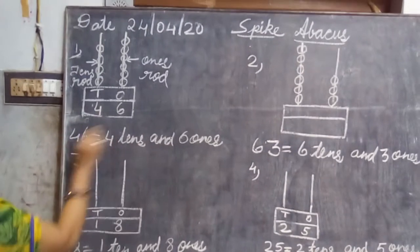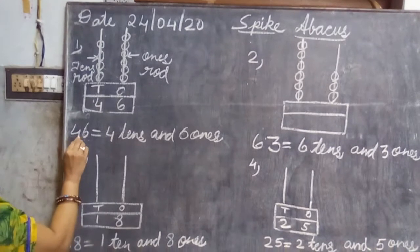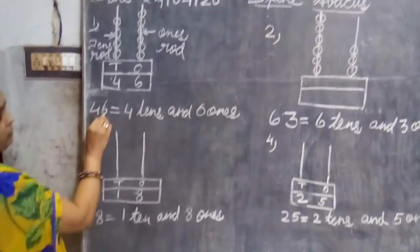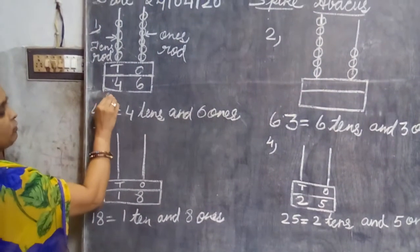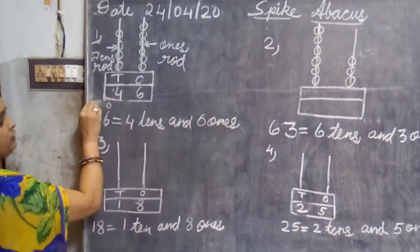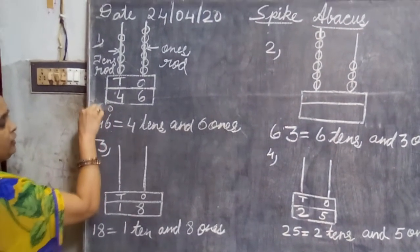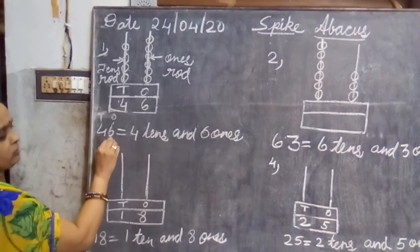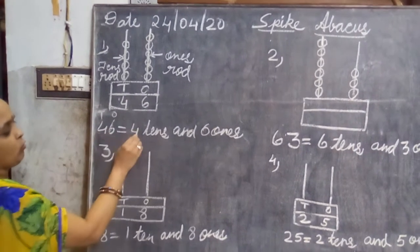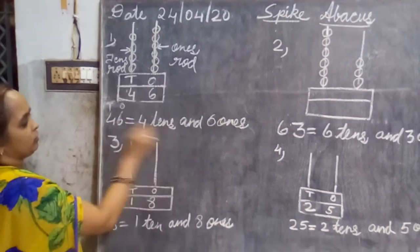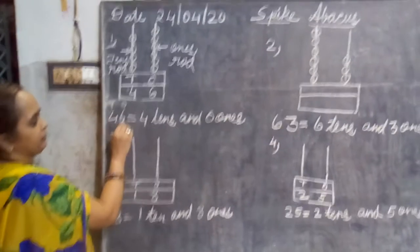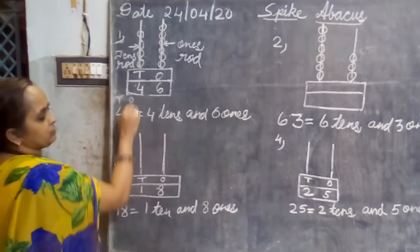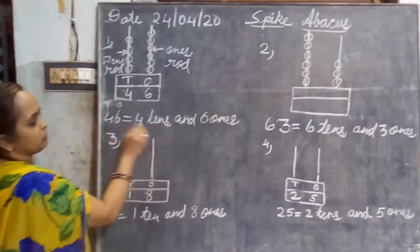Now see, the number formed is forty-six. Just see how we will write here forty-six. Forty-six means we will write here ones and here tens. So forty-six means four tens and six ones.